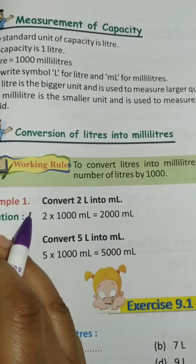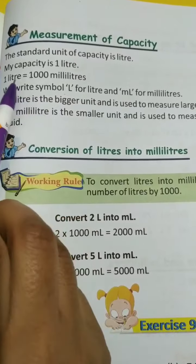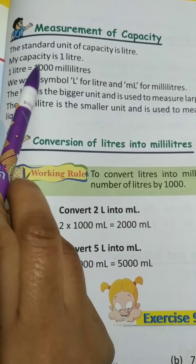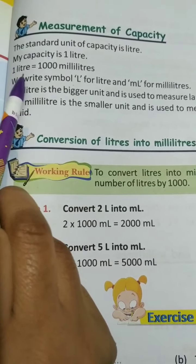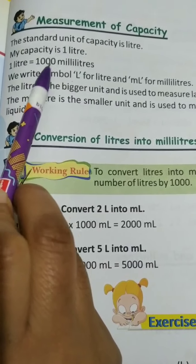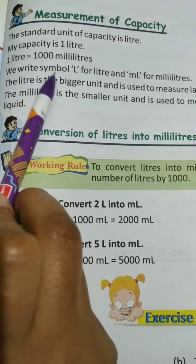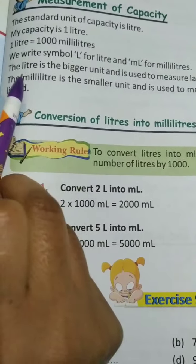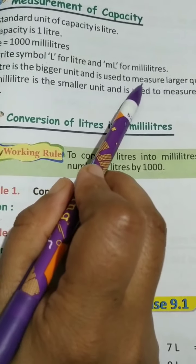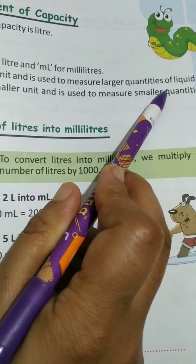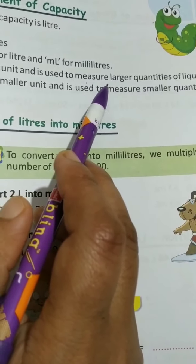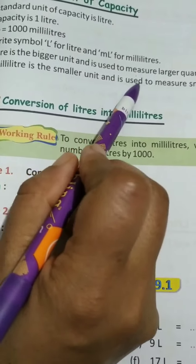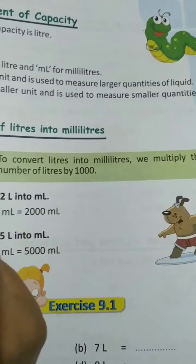Now here are some important points. The standard unit of capacity is liter. 1 liter is equal to 1000 milliliters. We write the symbol 'l' for liter and 'ml' for milliliters. The liter is the bigger unit and is used to measure larger quantities of liquid. The milliliter is the smaller unit and is used to measure smaller quantities of liquid.